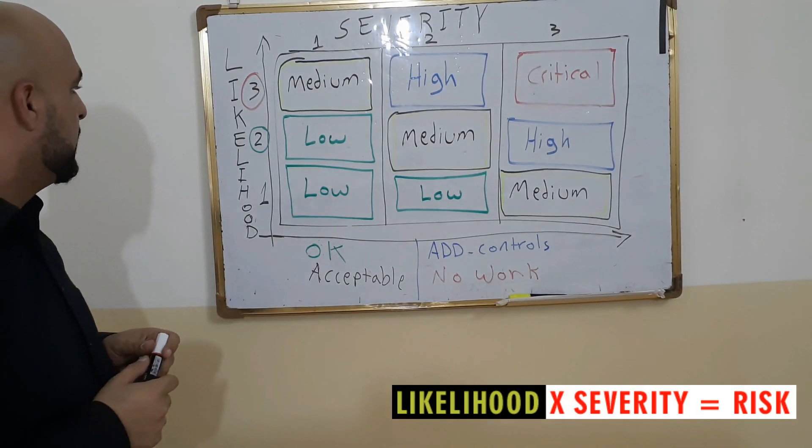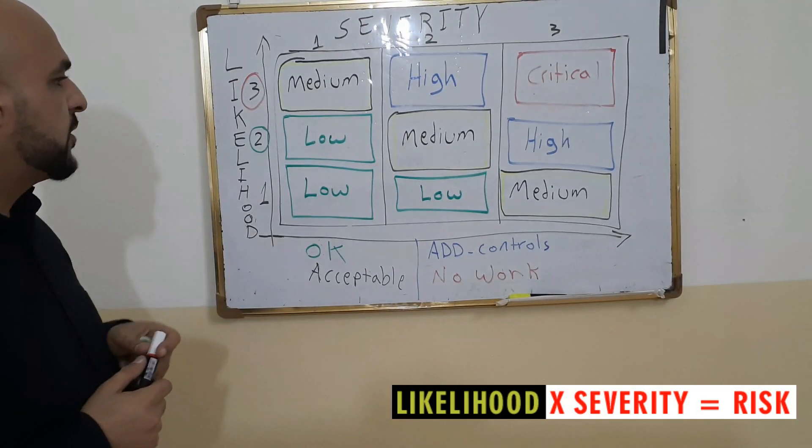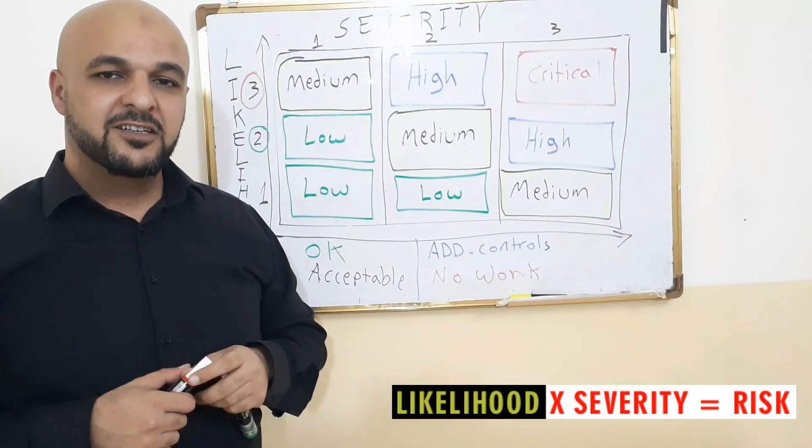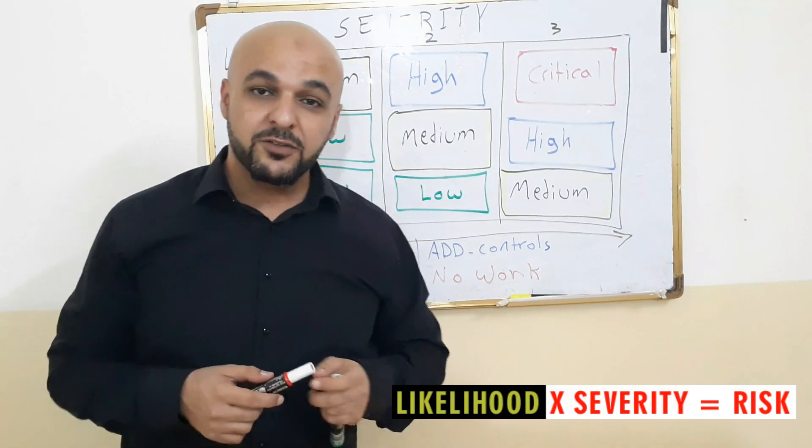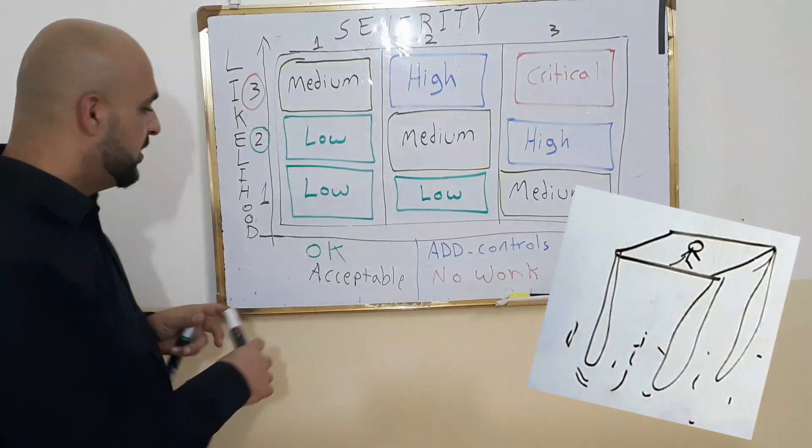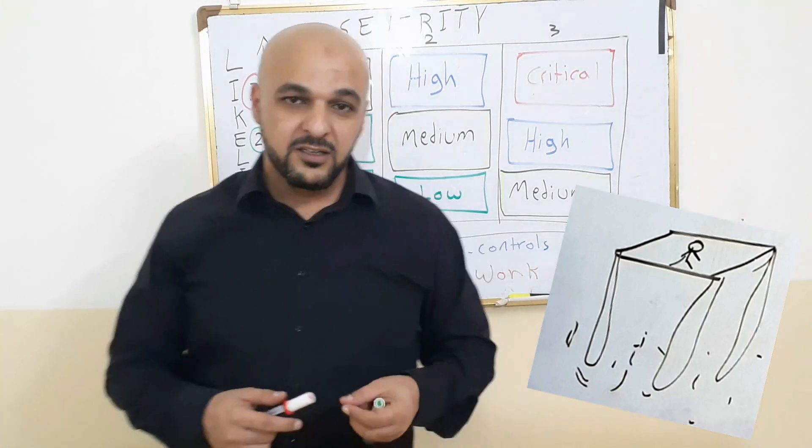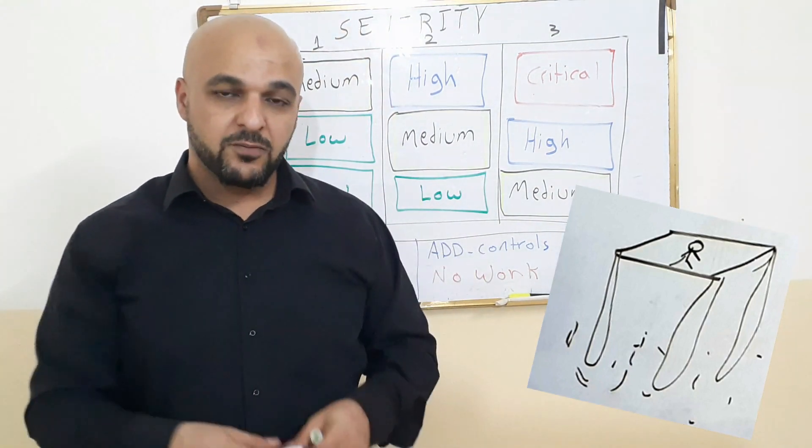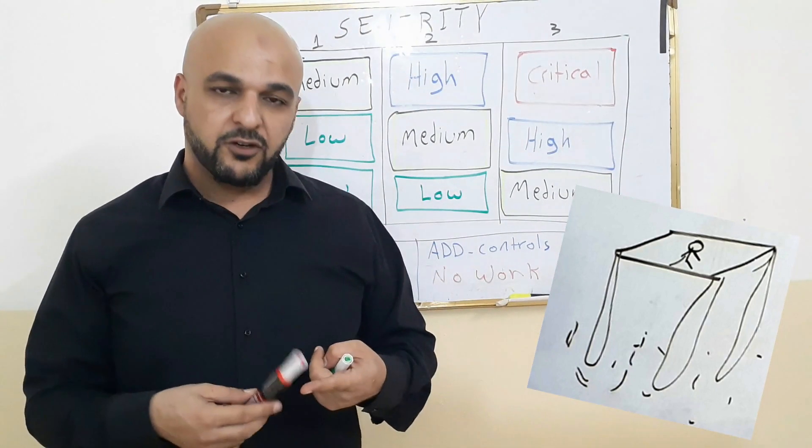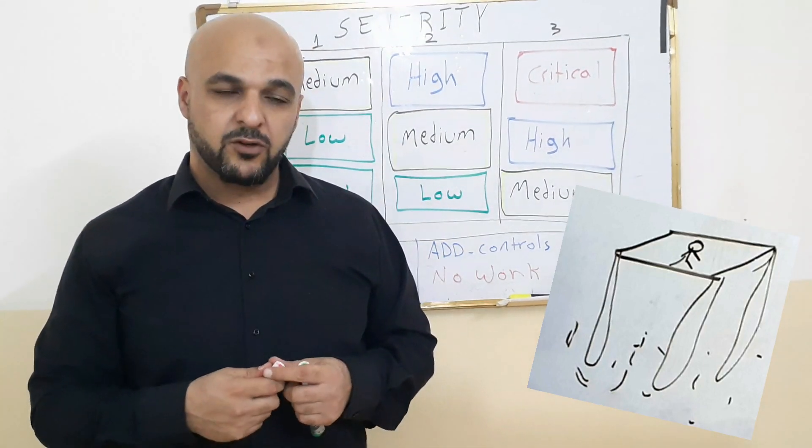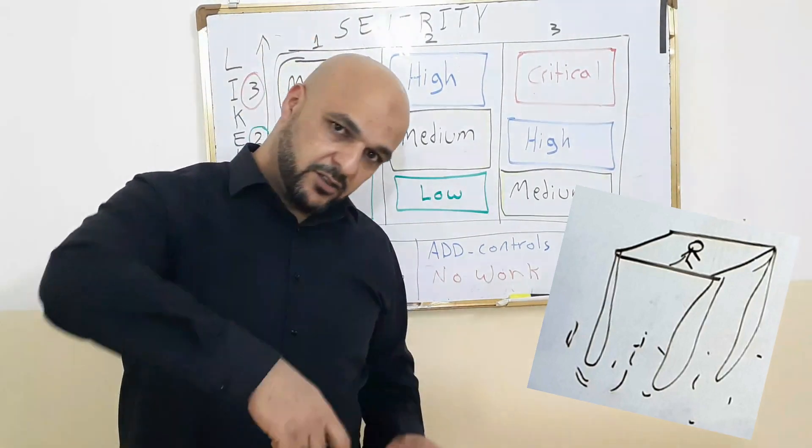So the likelihood is three, and the severity is also three. Because if he falls, as you see the garbage here, around his, you know, his scaffold in the bottom, maybe there is an exposed, you know, metal rod or something, or rebar or something. If he falls on it, what's going to happen?